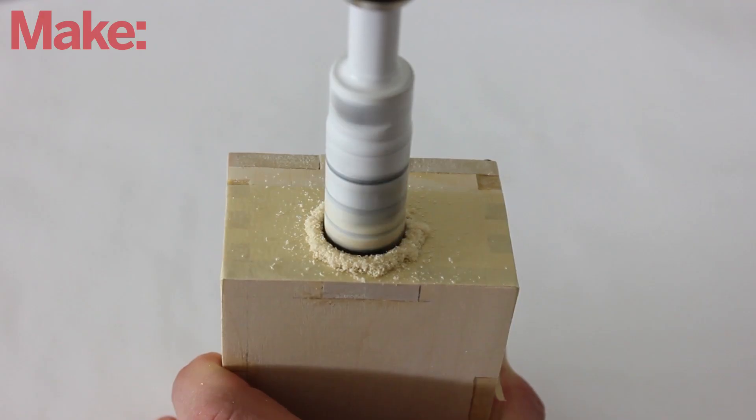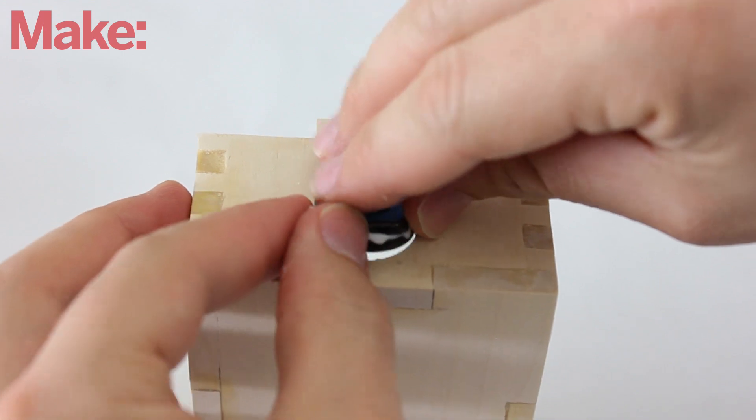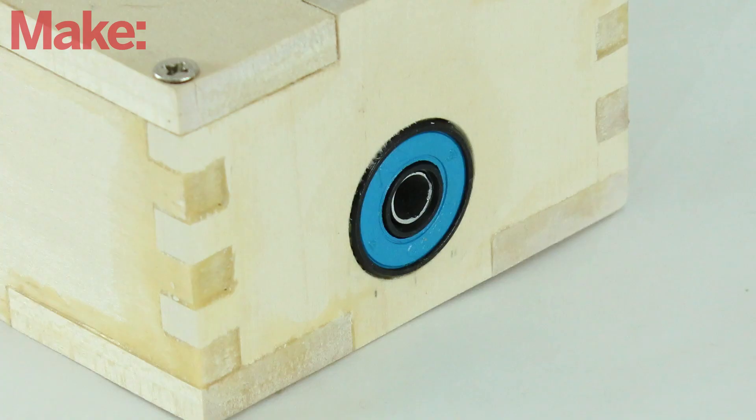On the opposite side of the box, I used a 7/8 hole saw to make a hole in line with the shaft of the motor. Then I glued a skateboard bearing into the hole. This will support the other side of the shaft.